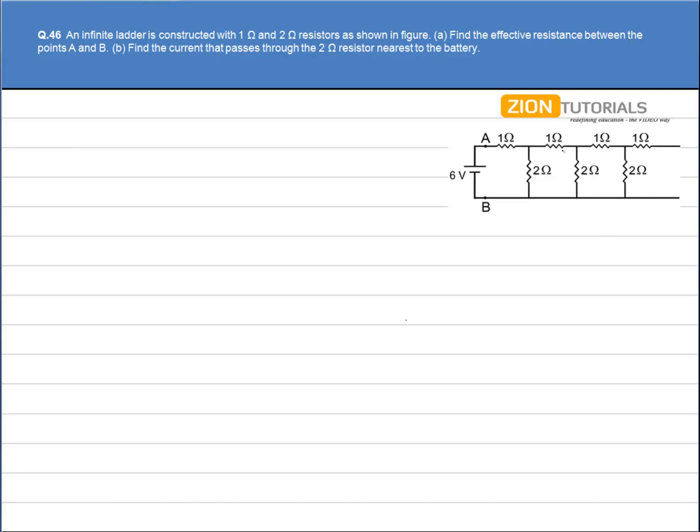Now since we have repeated 1 ohm and 2 ohm resistors and there is an infinite ladder, it hardly matters if we will neglect any single 1 ohm or 2 ohm resistors. So what we assume is that even if we neglect the 1 ohm and 2 ohm resistors, the resistance will be same.